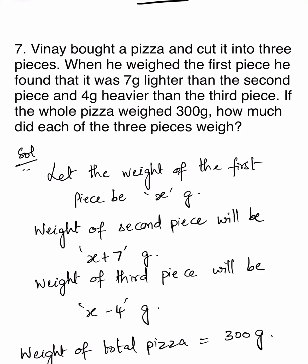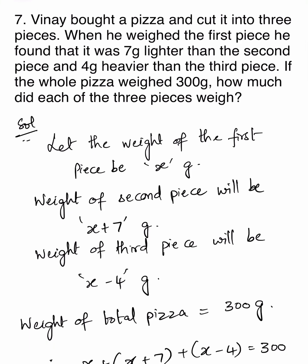Let the weight of the first piece be x grams. It is given that the first piece is 7 grams lighter than the second piece. Therefore, weight of the second piece will be x plus 7. Weight of the third piece will be x minus 4, because the first piece is 4 grams heavier than the third piece.